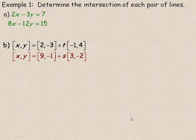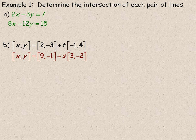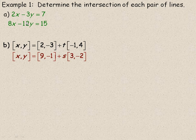And still in 2-space here, it says determine the intersection of each pair of lines. So we're given two in scalar form, and we're going to use the method of elimination or substitution. I'm going to use elimination here.